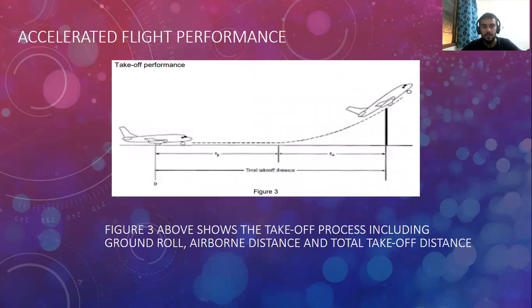As for the accelerated flight performance, there are two. Basically, the first is takeoff performance. Figure 3 above is the takeoff process, which includes ground roll, airborne distance, and total takeoff distance.